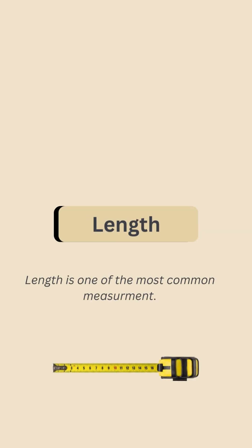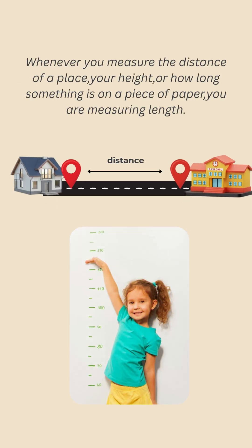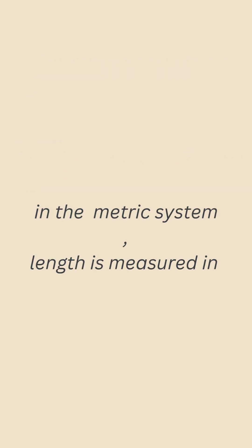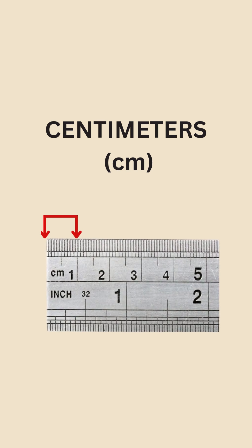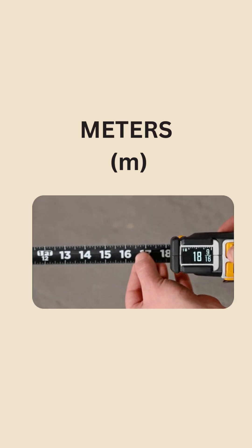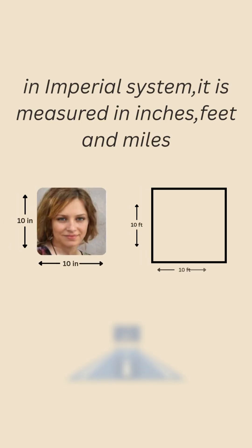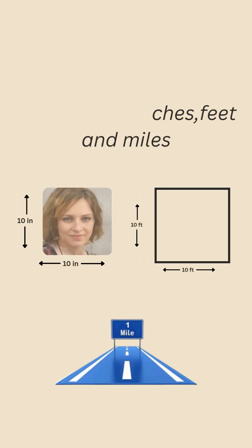Length is one of the most common measurements. Whenever you measure the distance of a place, your height, or how long something is on a piece of paper, you are measuring length. In the metric system, length is measured in centimeters (cm), meters (m), and kilometers (km). In the imperial system, it is measured in inches, feet, and miles.